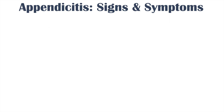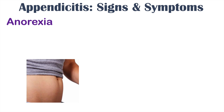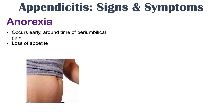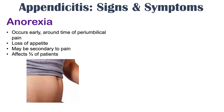Other signs and symptoms of appendicitis include anorexia — a loss or reduced appetite. This occurs early, around the time of periumbilical pain, and may be secondary to pain. Anorexia and that generalized periumbilical pain are some of the first signs and symptoms to occur with appendicitis, affecting approximately 75% of patients.